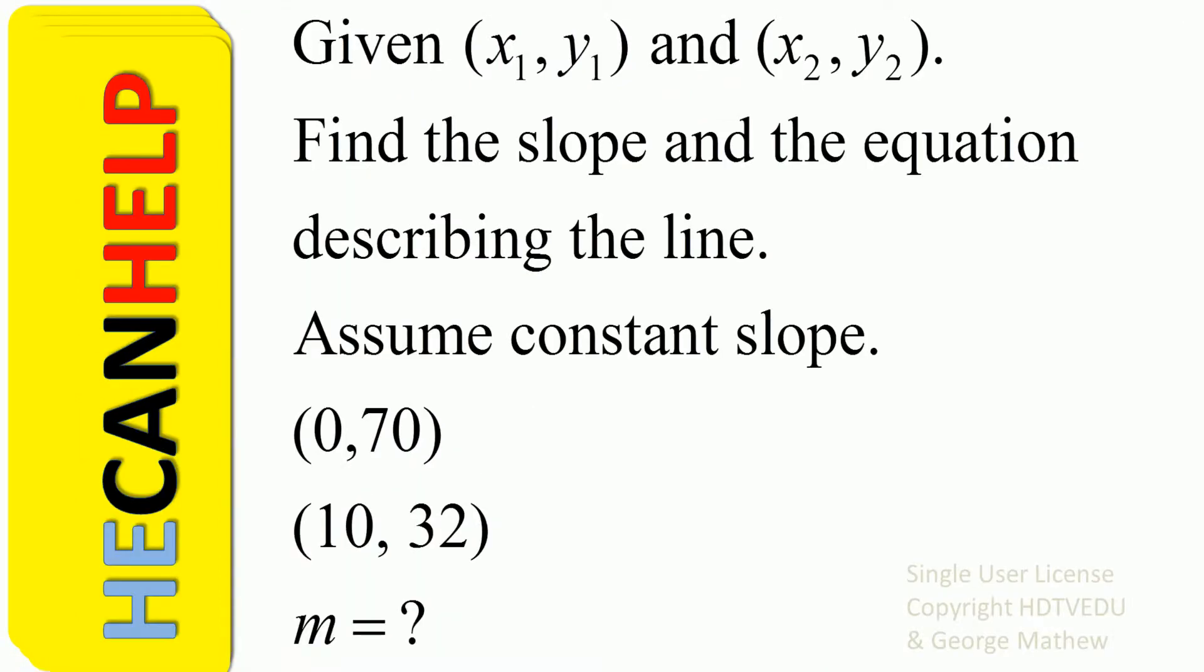Given x1, y1 and x2, y2, find the slope and the equation describing the line. Assume constant slope. We are given (0, 70) and (10, 32). What is the slope? And what is the equation of the line?